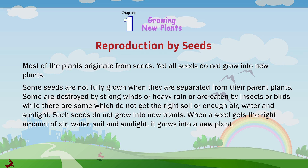When a seed gets the right amount of air, water, soil and sunlight, it grows into a new plant.